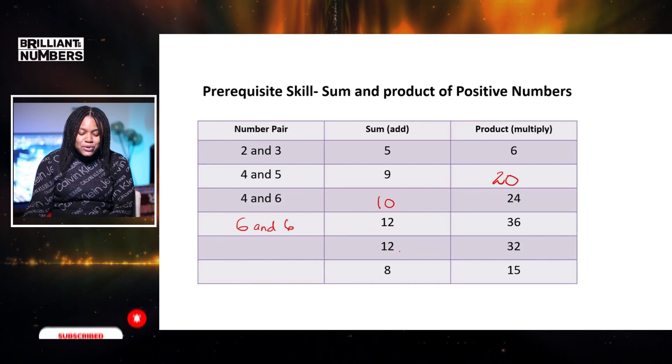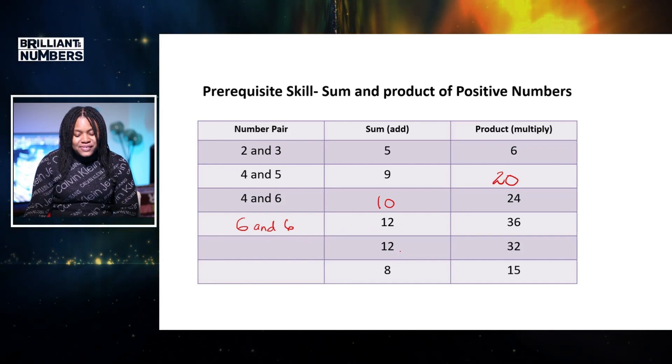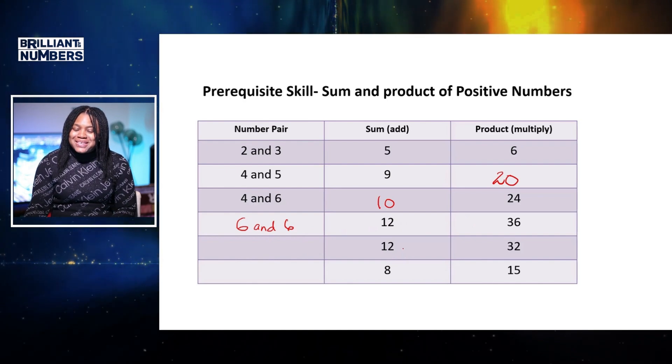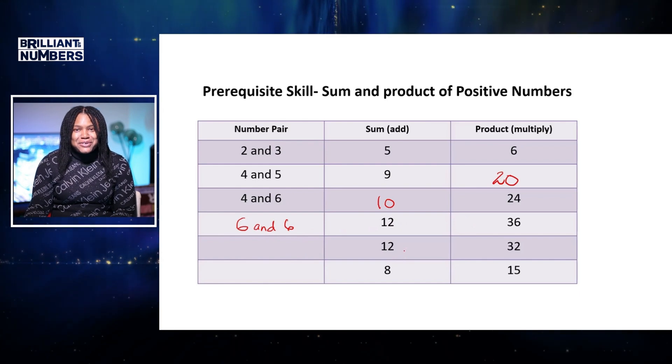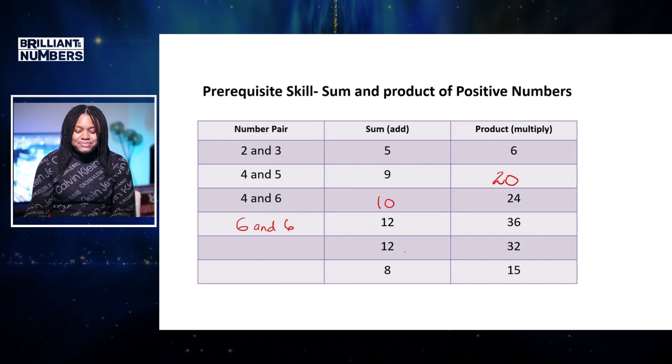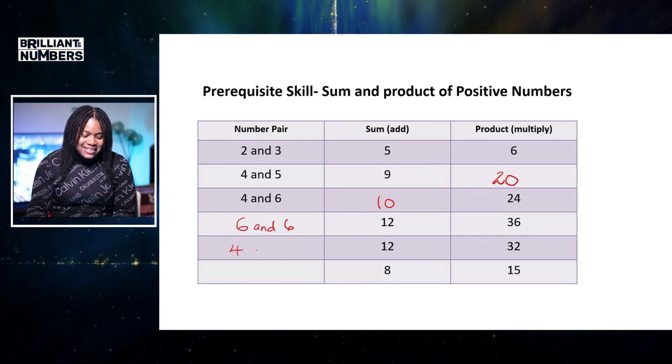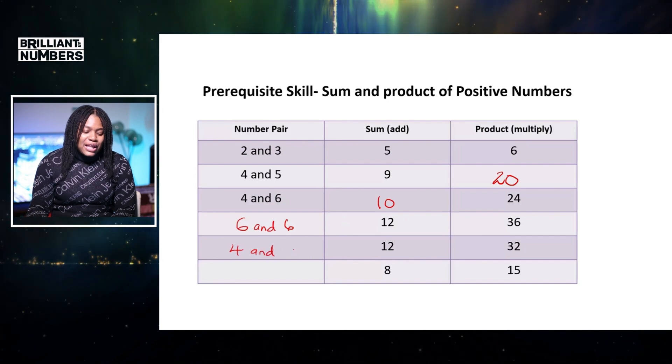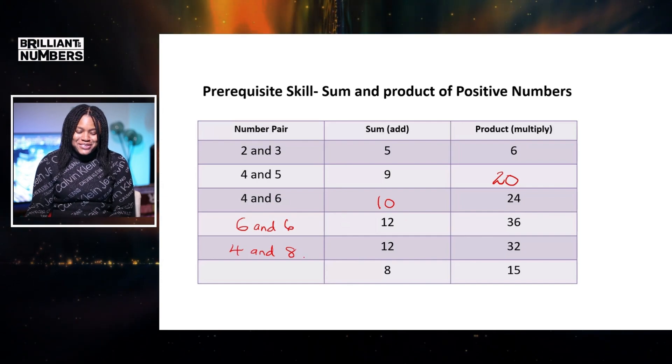You have also another example here. The sum of two numbers is 12, and the product of those two numbers is 32. What two numbers add together to give 12, but multiply together to give 32? And the answer is 4 and 8. So 4 plus 8 gives us 12, but multiply together to give 32.